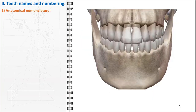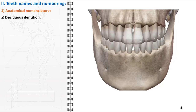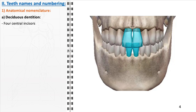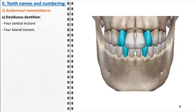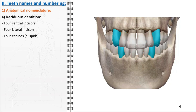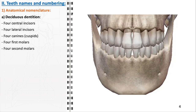In dental anatomy, teeth are categorized based on their developmental stage and type. Starting with deciduous dentition, these are the first set of teeth that appear in early childhood, totaling 20 teeth. This includes four central incisors, four lateral incisors, four canines — often referred to as cuspids — known for their pointed shape and crucial for tearing food, and four first molars and four second molars, essential for grinding food.